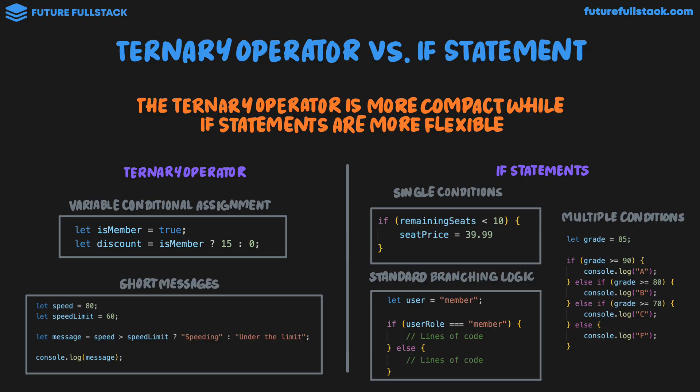I know it can be overwhelming learning about the ternary operator, which kind of does the same thing as a binary if statement — that is, if-else — but is used in certain circumstances. As a general rule of thumb, if statements are more commonly used. Just know the ternary operator is used for specific circumstances, but the if statement is going to be used a lot more in your code.